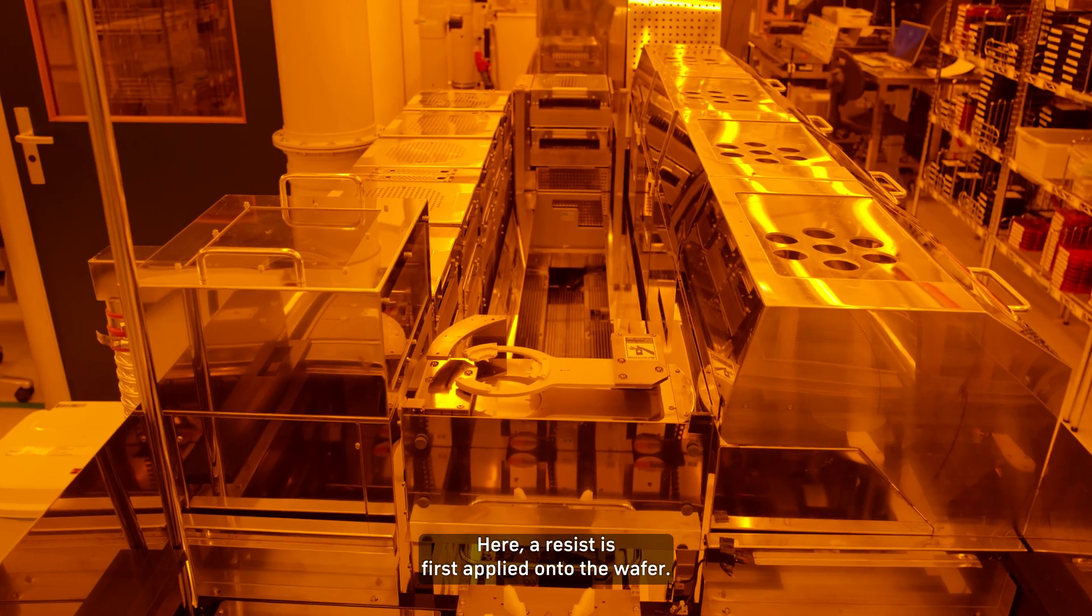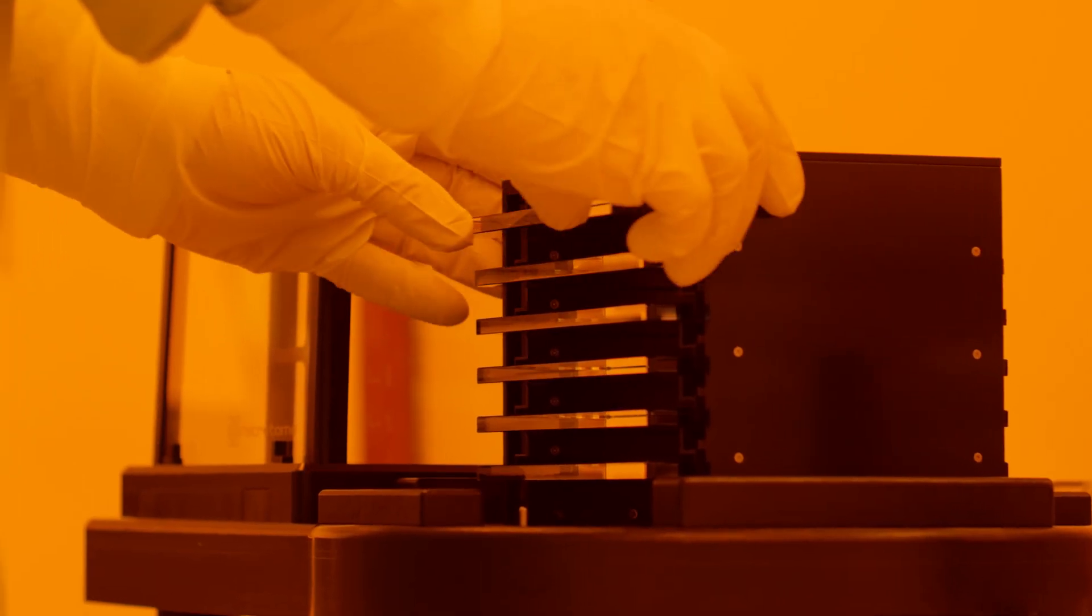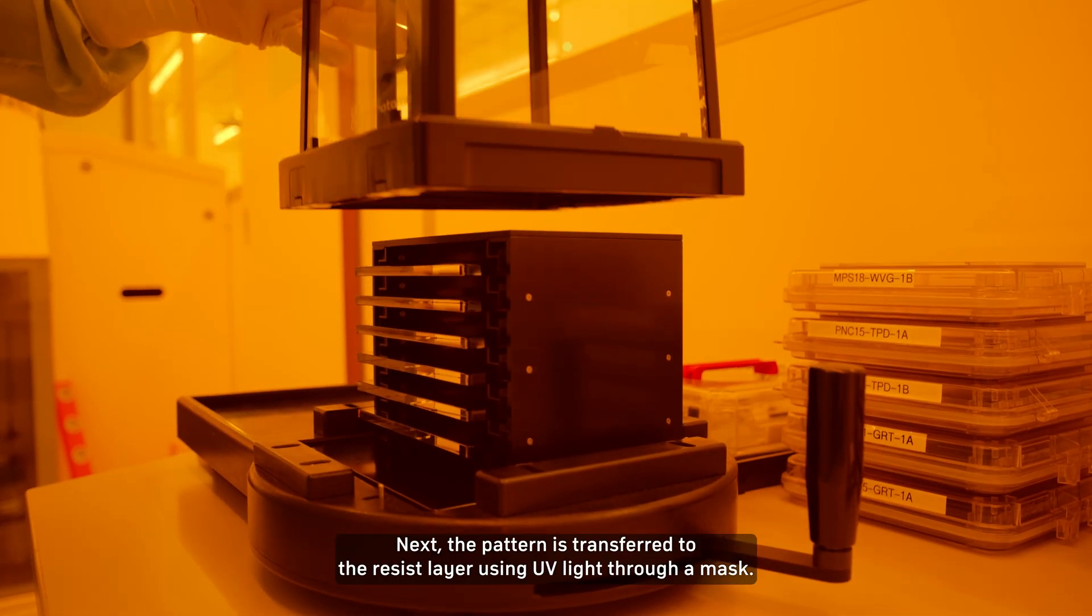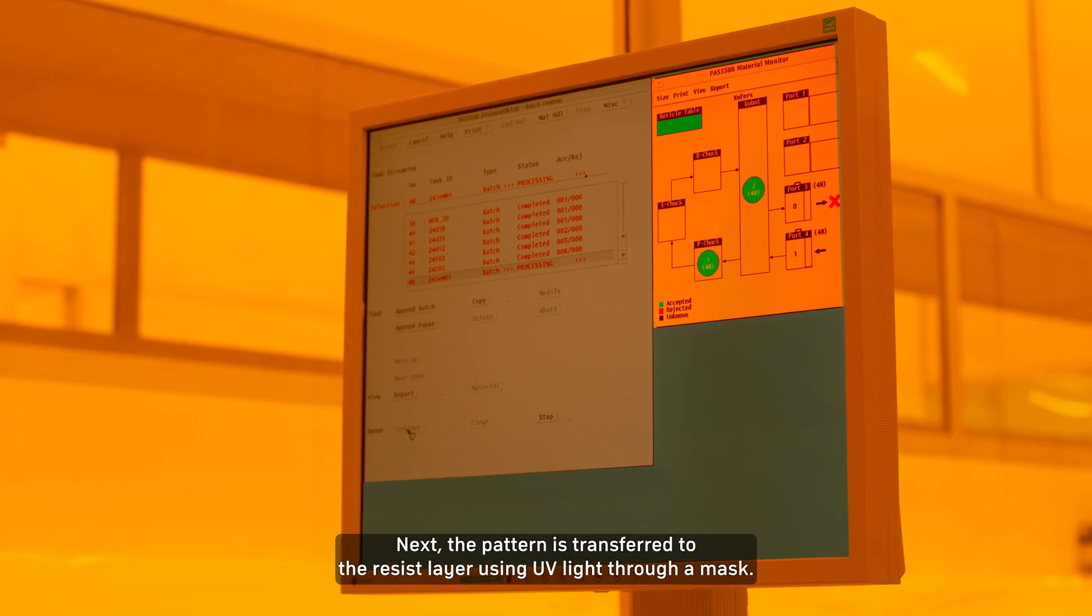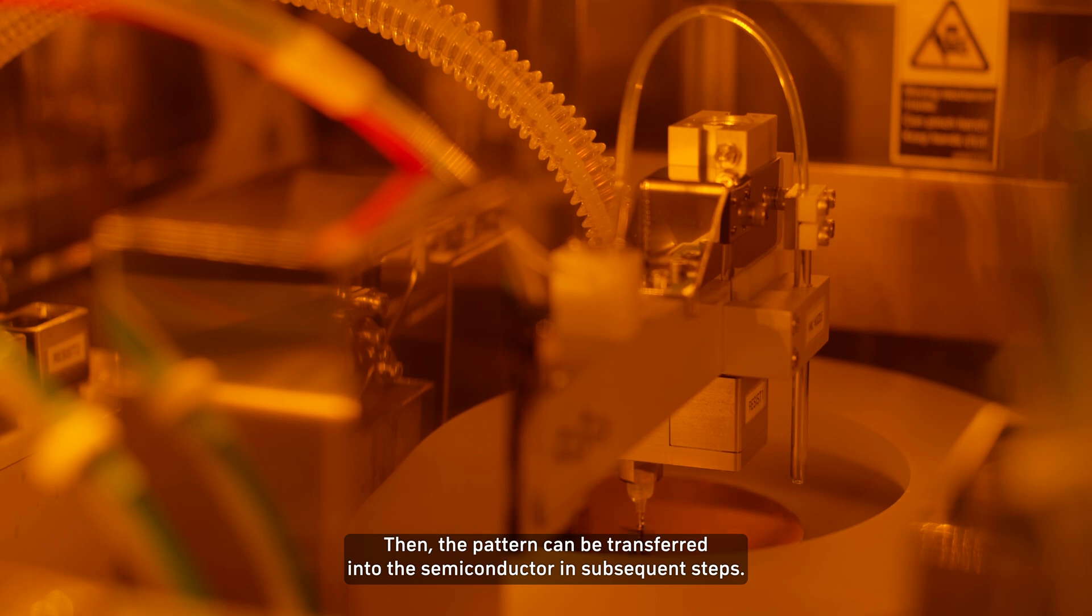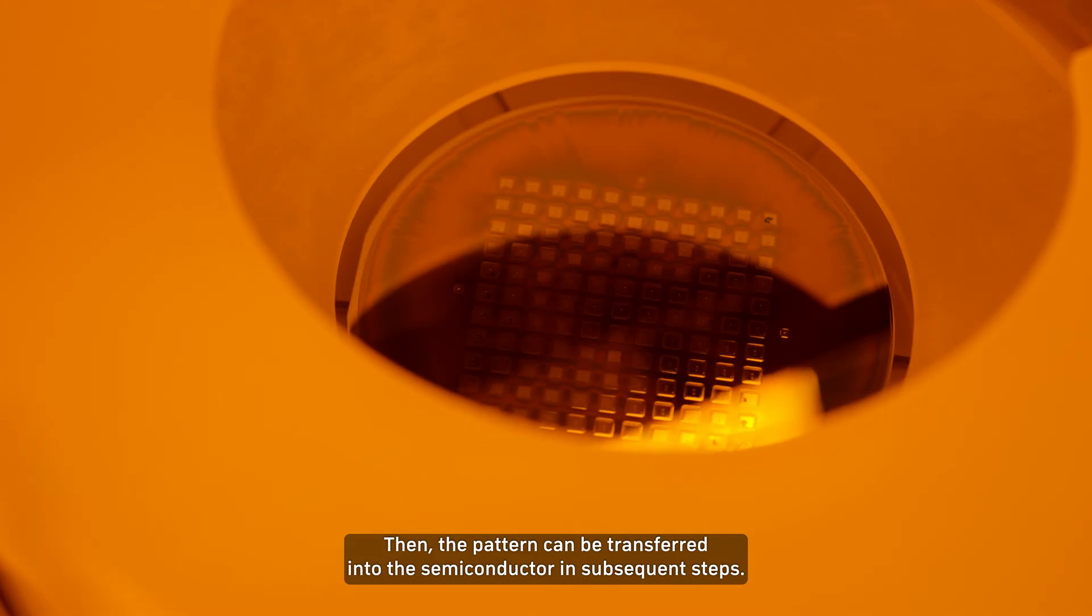Here, a resist is first applied onto the wafer. Next, the pattern is transferred to the resist layer using UV light through a mask. Then, the pattern can be transferred into the semiconductor in subsequent steps.